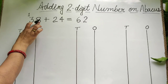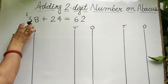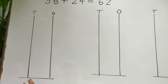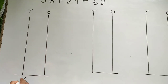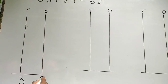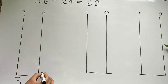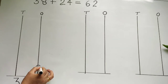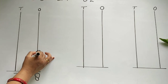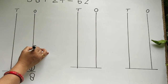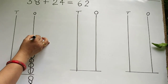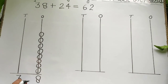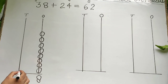Three tens, eight ones is equal to 38. So we will write down on the abacus: three tens, eight ones. Draw beads on the ones rod first: one, two, three, four, five, six, seven, eight. After that draw 3 beads on the tens rod: one, two, three.